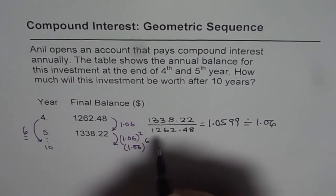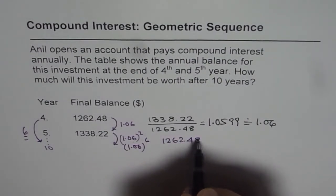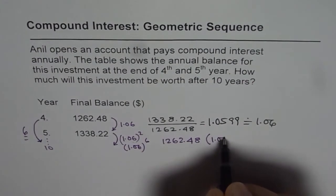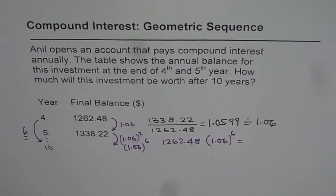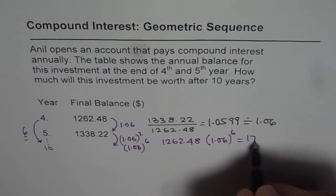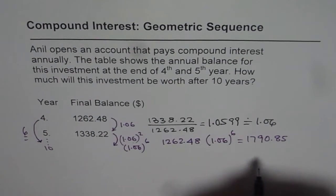So the amount should be 1262.48 times 1.06 to the power of 6. Calculating this: 1262.48 × 1.06^6 equals approximately 1790.85.